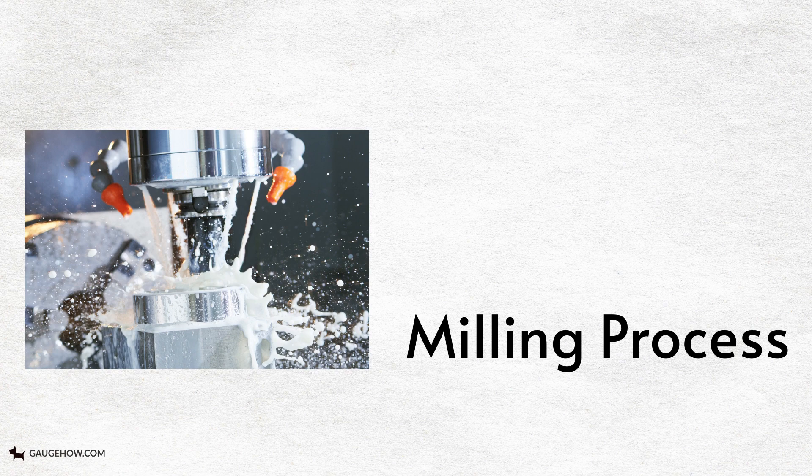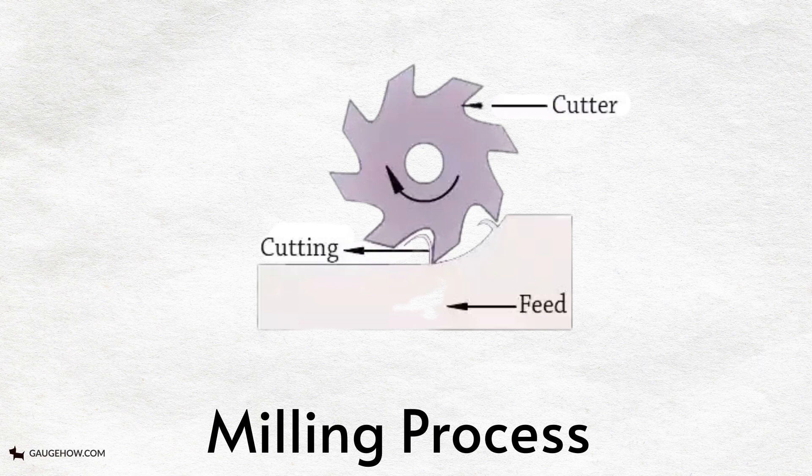Milling process. Milling is a machining process that is performed with a rotary cutter with several cutting edges arranged on the periphery of the cutter.